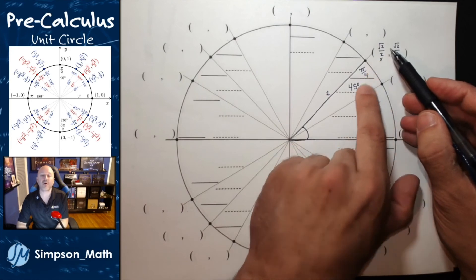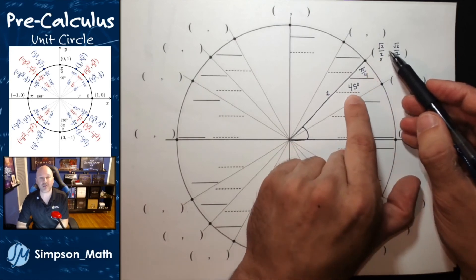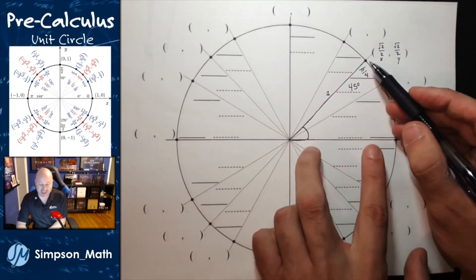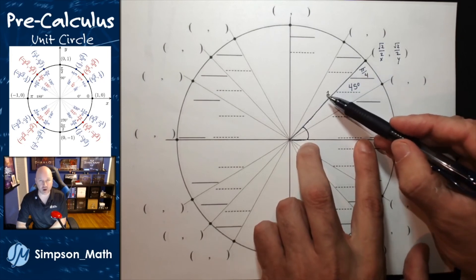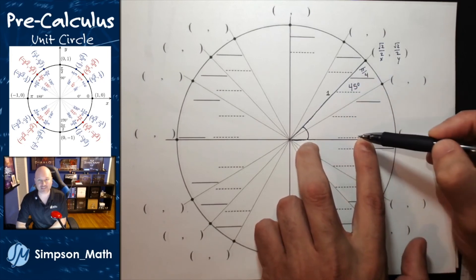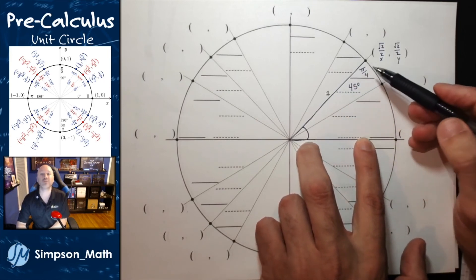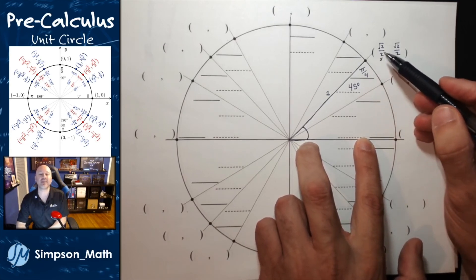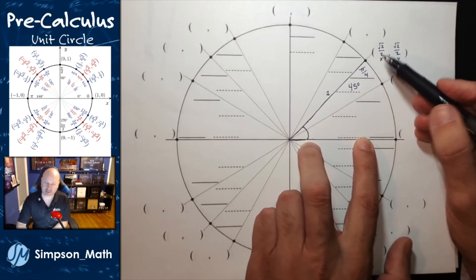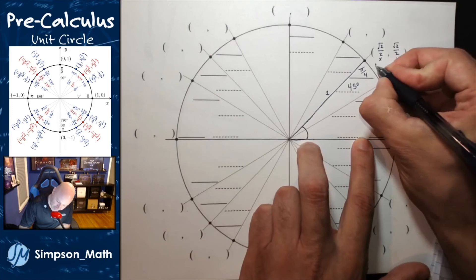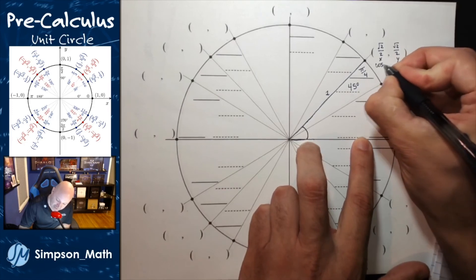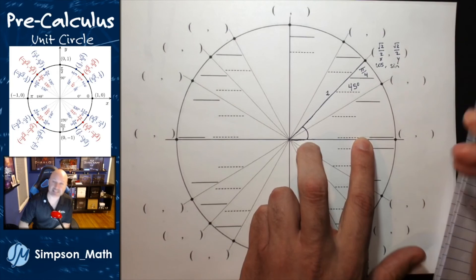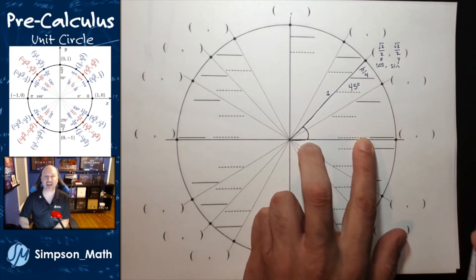Cosine is sitting right here — cosine of 45 degrees. Cosine represents x over r, or just the x value, which is the same root 2 over 2. So cosine of 45 degrees is root 2 over 2. The x coordinate represents the cosine value, and the y coordinate represents the sine value.